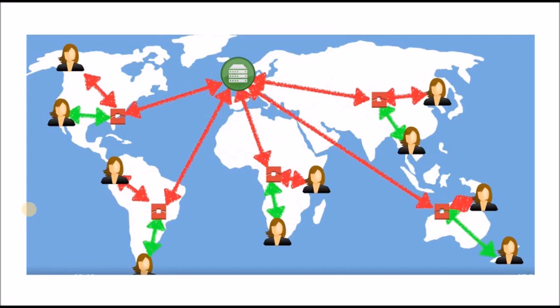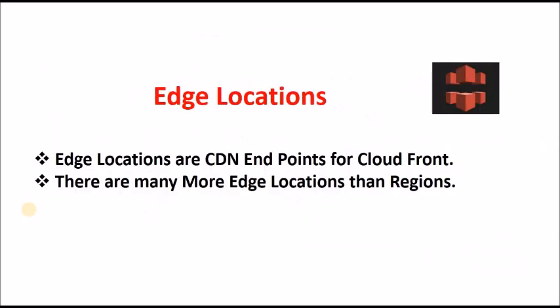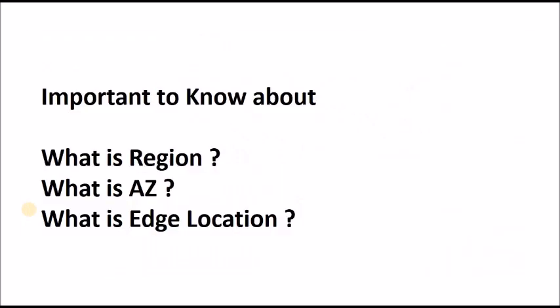When a second user tries to access that same content, it will not go to the London server — it will be served directly from the edge location. This is how edge locations work. There are more edge locations than regions, so this is very important to understand.